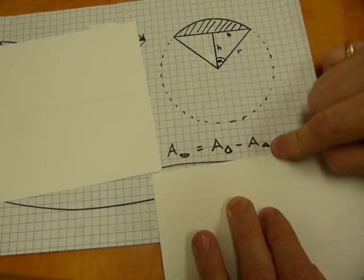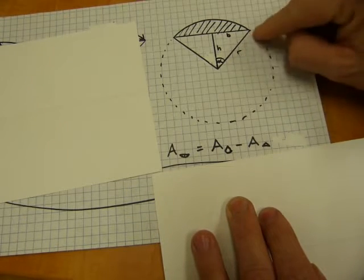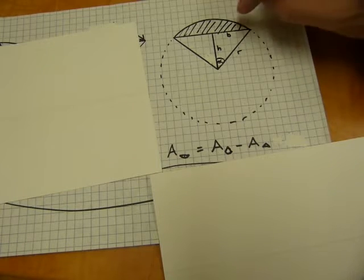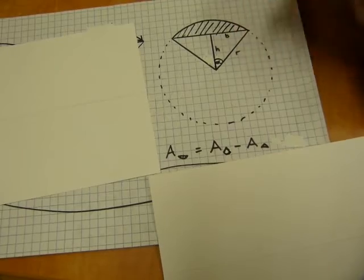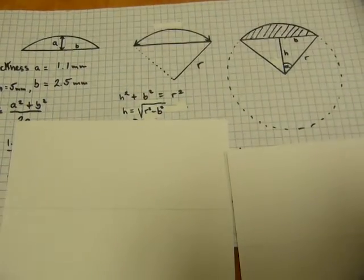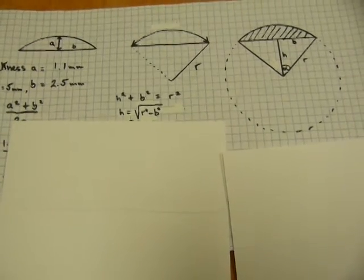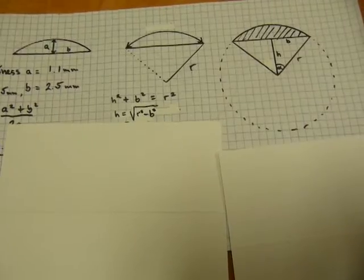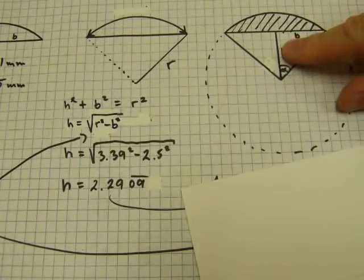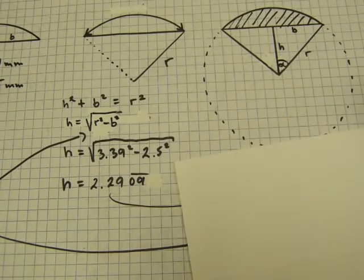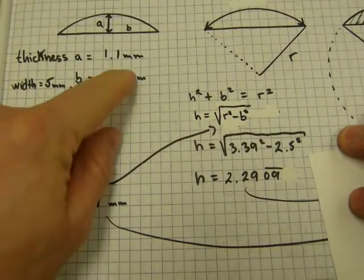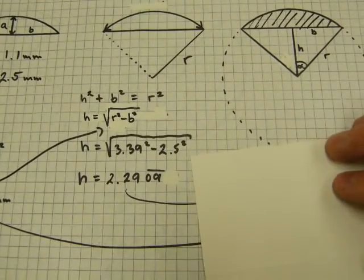I hope that makes sense and to get the area of the triangle for example or anything else you need this radius which we already calculated and we also need this height. Well we have an a square b square c square situation except these are not called a b and c, these are called h b and r, same idea. So h square plus b square equals r square. Come on in a little closer maybe, just give me a sec here, maybe just like so you can see.